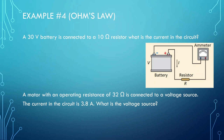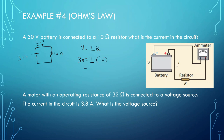A 30-volt battery is connected to a 10-ohm resistor. What is the current in the circuit? I'm going to draw this out quickly — 30 volts, 10-ohm resistor. We want to know what the current is. So V equals IR: 30 is equal to I times 10, and we know that current is equal to 3 amps.